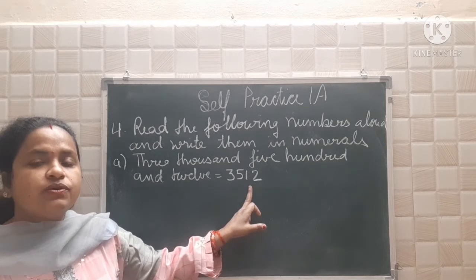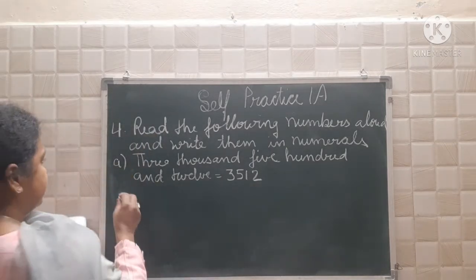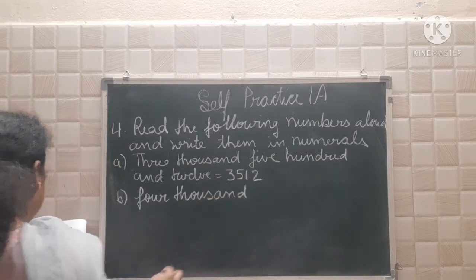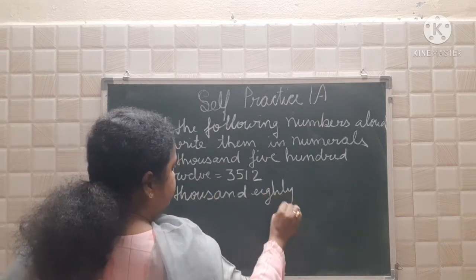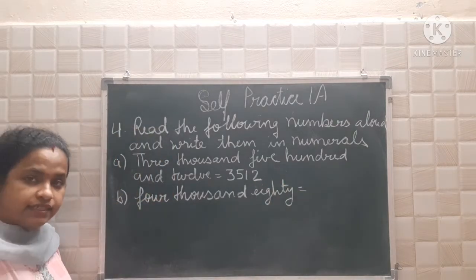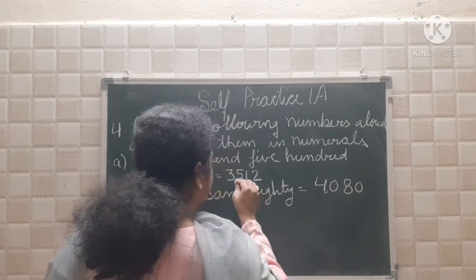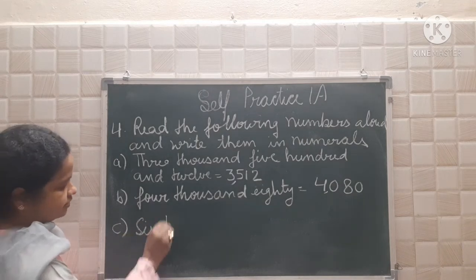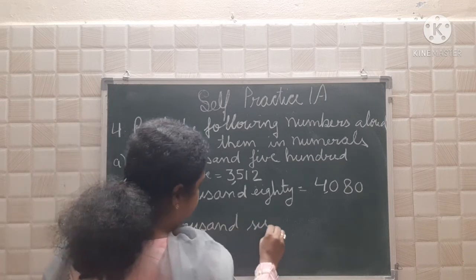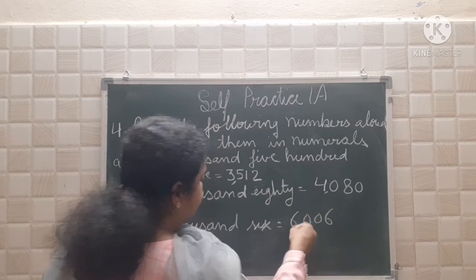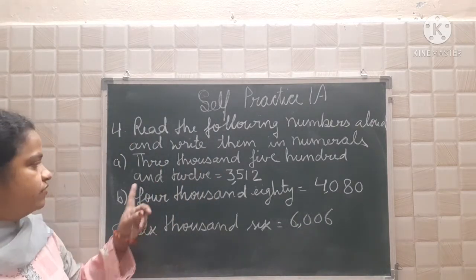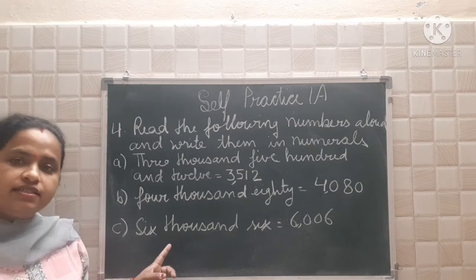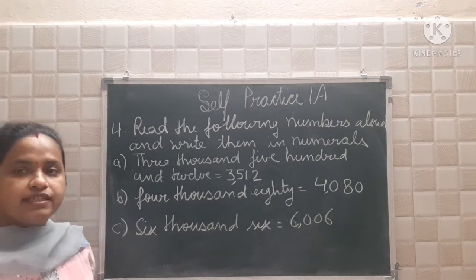3,512. Now see part B: 4,080. It means 4,080. Now see part C: 6,006. So you will write 6,006. To summarize: here you have written 3,512, here 4,080, and here 6,006. In this question you have to write in the compact form.